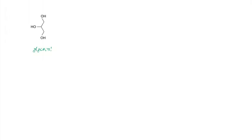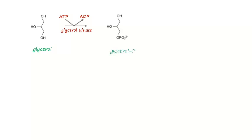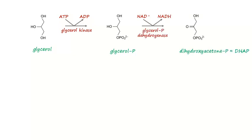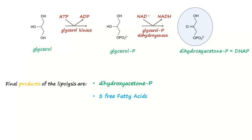Afterward, the glycerol will continue its pathway, in which adenosine-3-phosphate and the glycerol-kinase enzyme will transform it into glycerol-phosphate. Then, the NAD coenzyme and glycerol-dehydrogenase will transform it into dihydroxyacetone-phosphate. So, the final products of lipolysis are dihydroxyacetone-phosphate and three fatty acids.